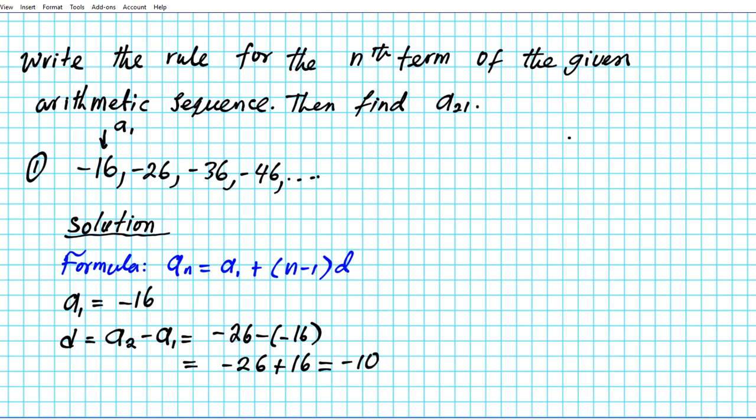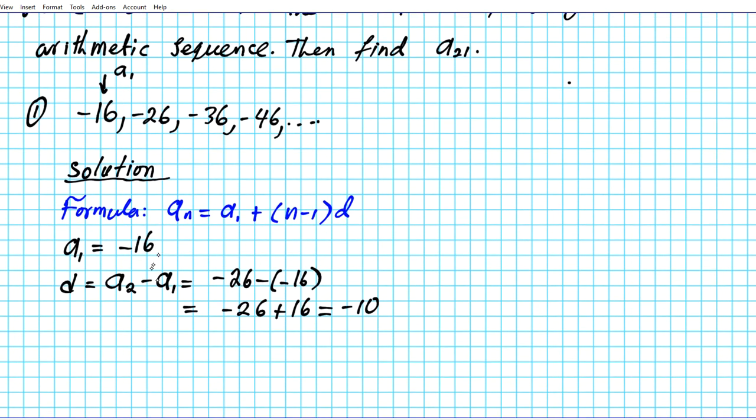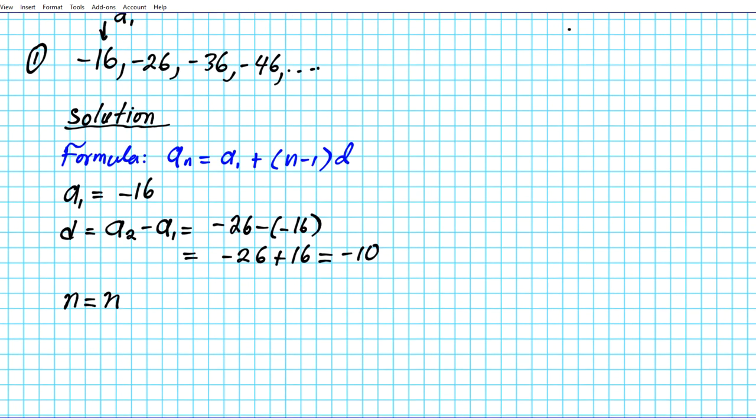Okay, so this is our first term and that's our common difference, negative 10. For the rule, n is simply going to be n. Now let's plug in all this information into the equation. We have aₙ equals a₁, the first term negative 16, plus n minus one times the common difference which is negative 10.